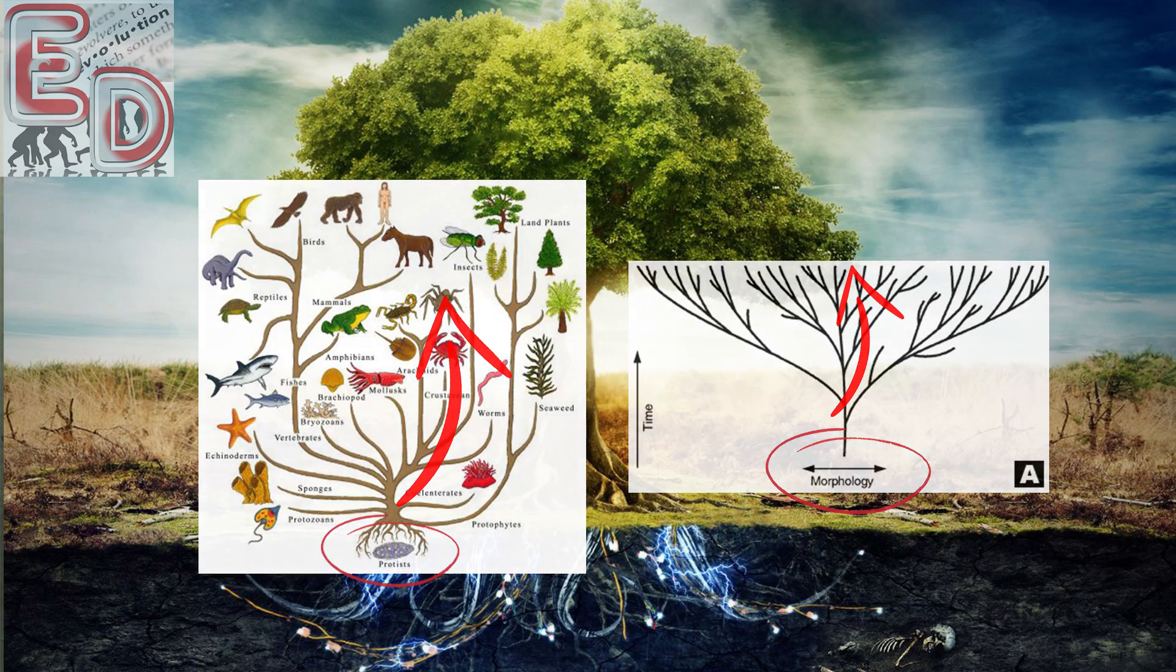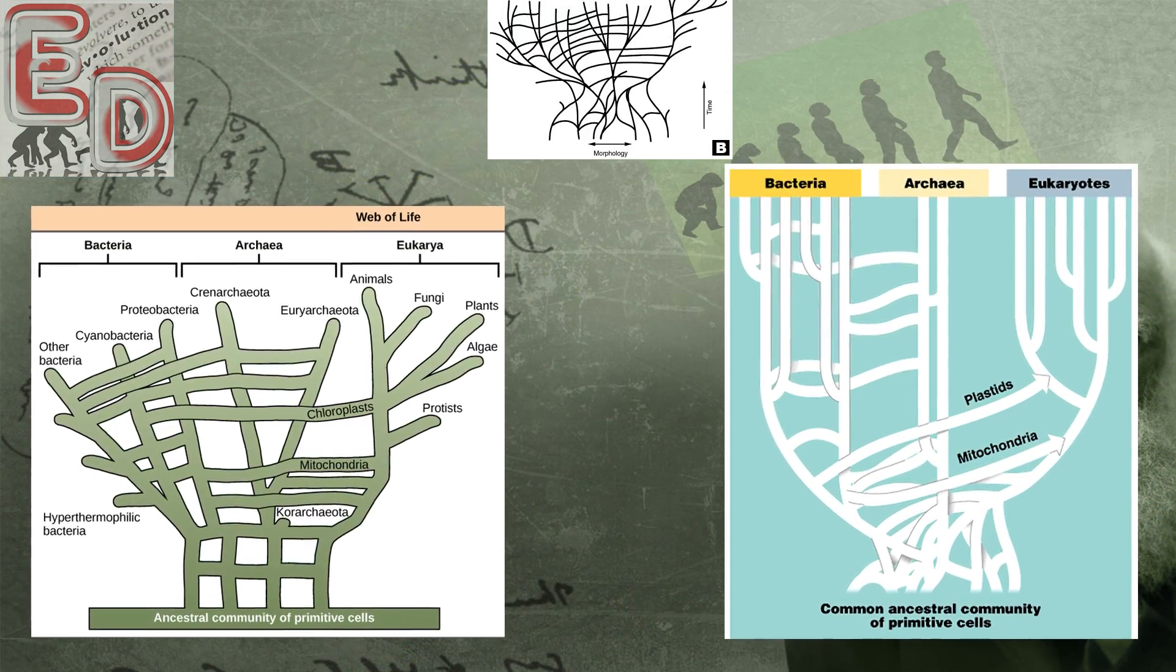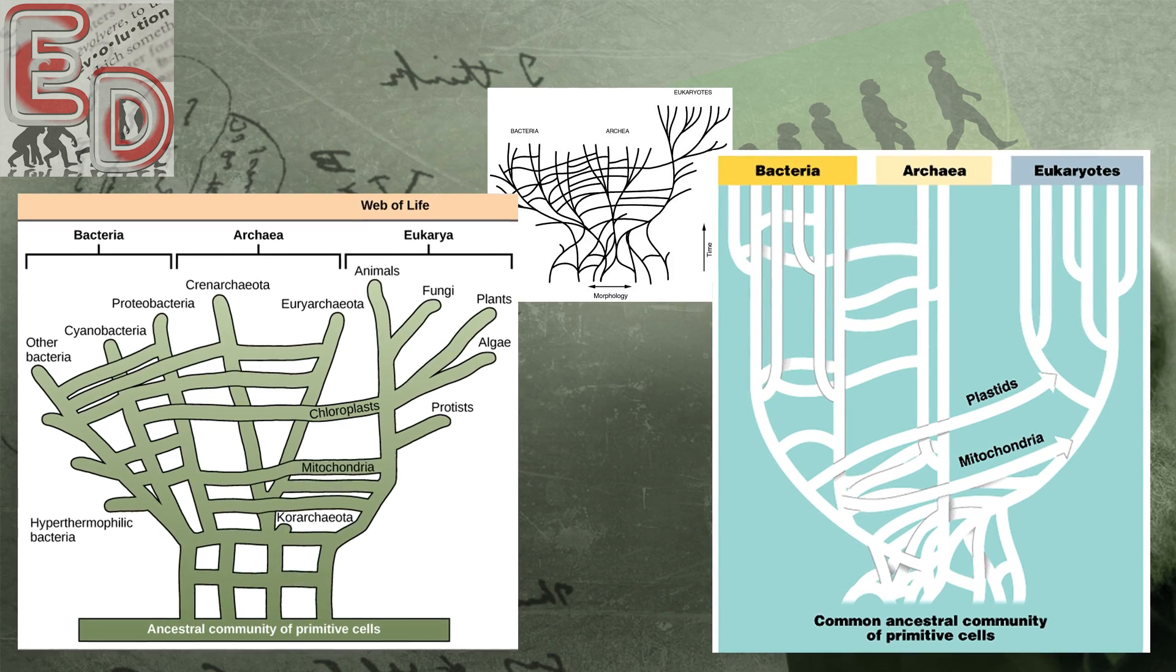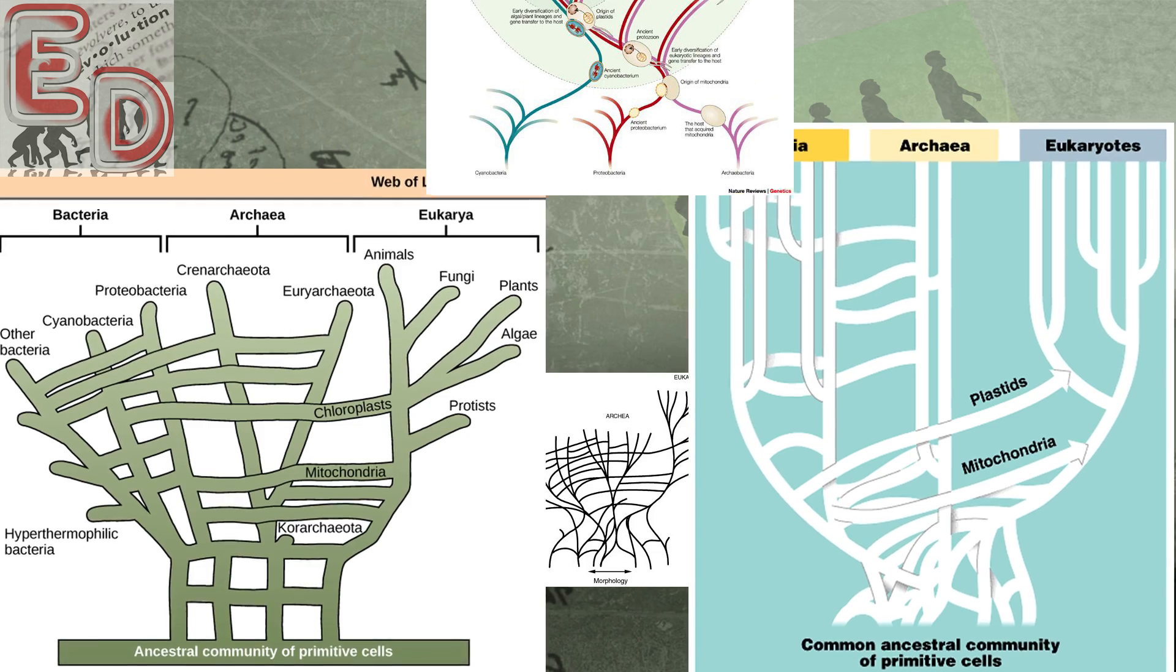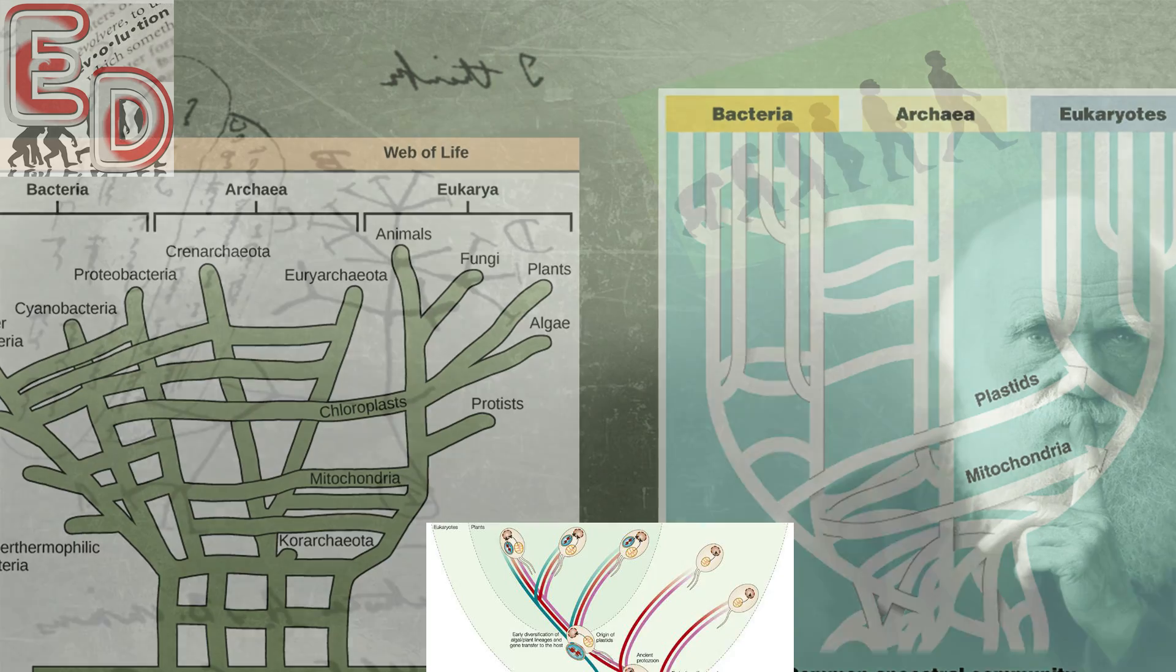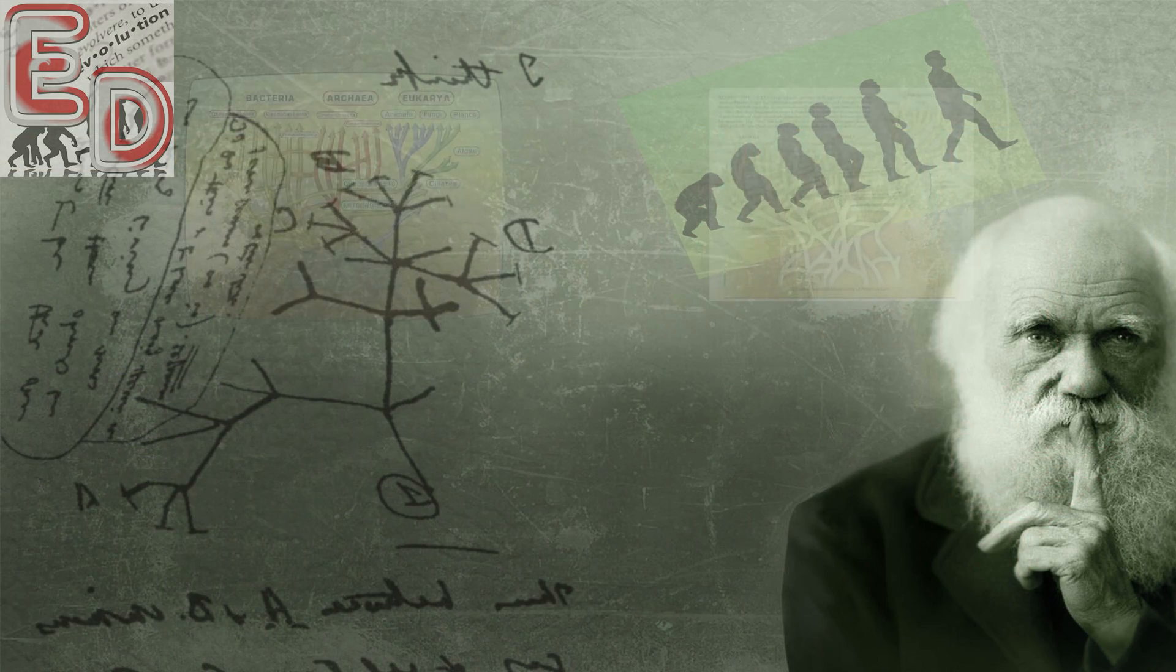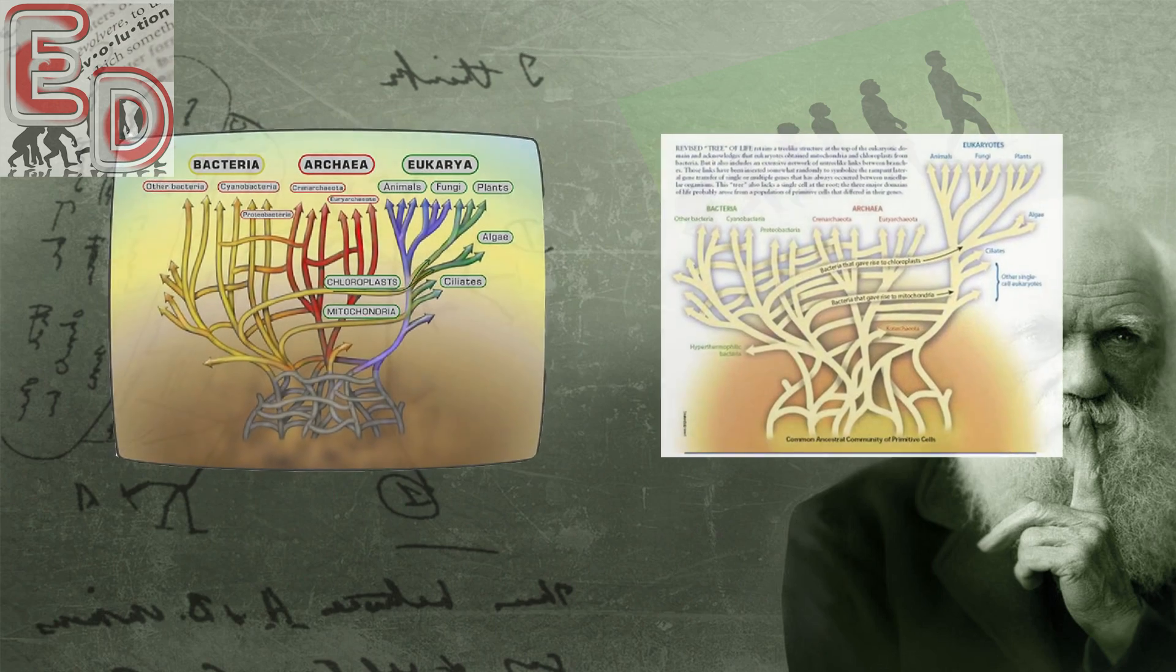However, new genetic evidence has caused revisions. Now there is a supposed group or community of cells at the root of the tree and the different trunks of the tree are theorized to transfer genes to each other laterally. The reason for this change, quite simply, is that the genetic data did not match the evolutionary predictions. Organisms that evolutionists didn't think were closely related shared more genes than expected, and vice versa.